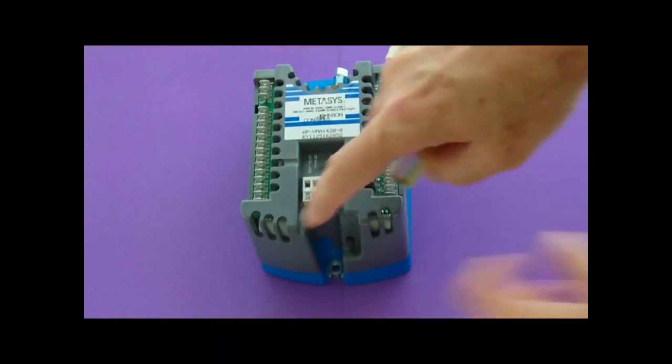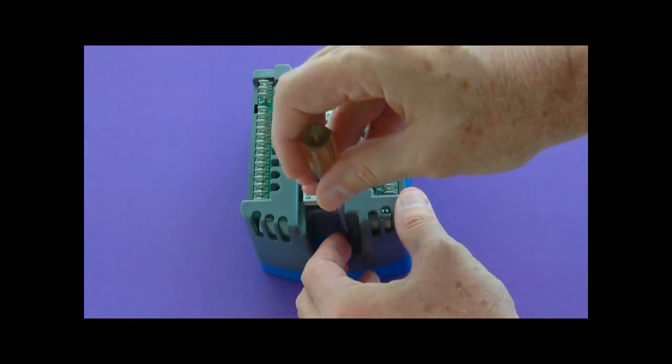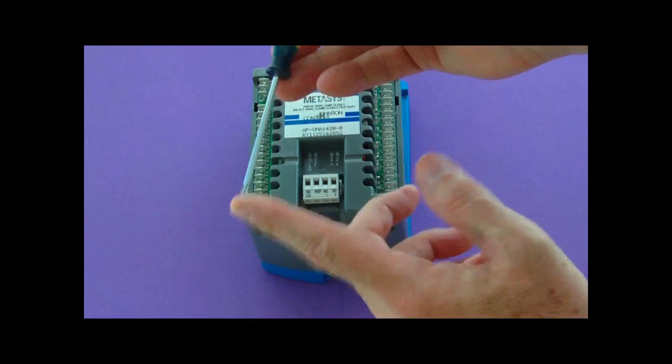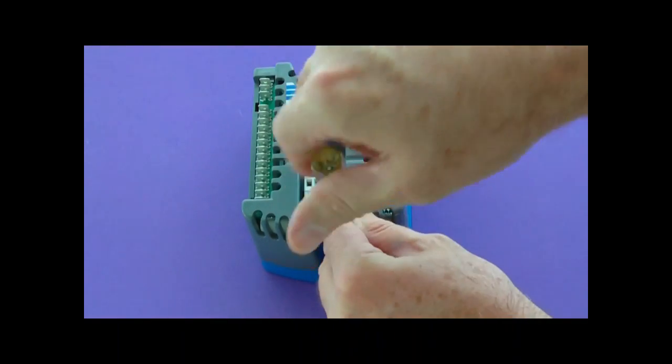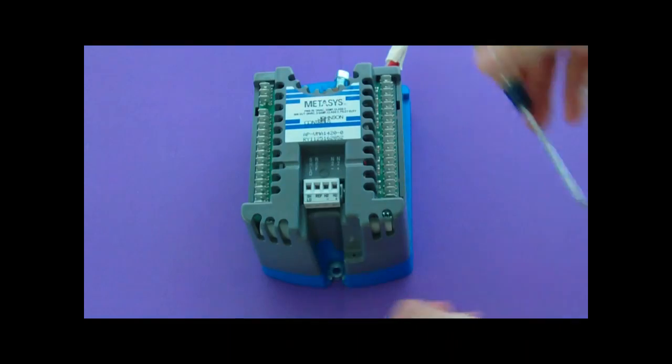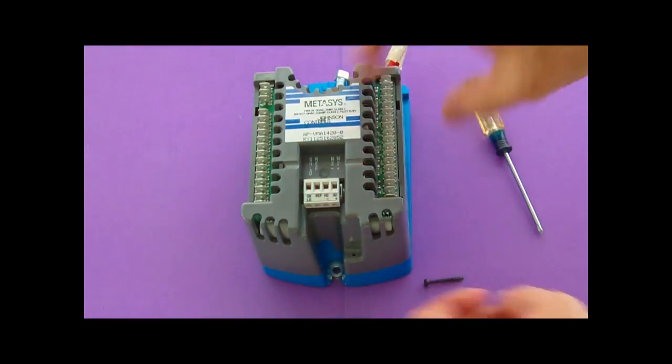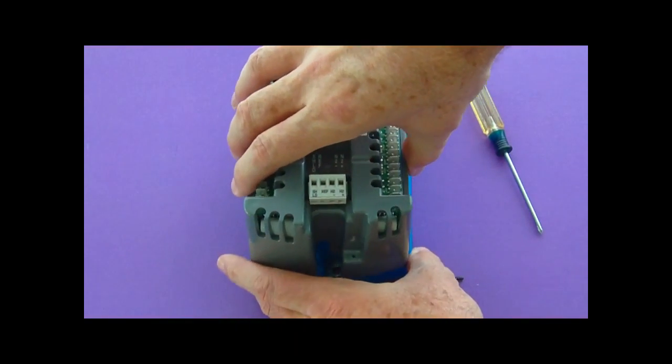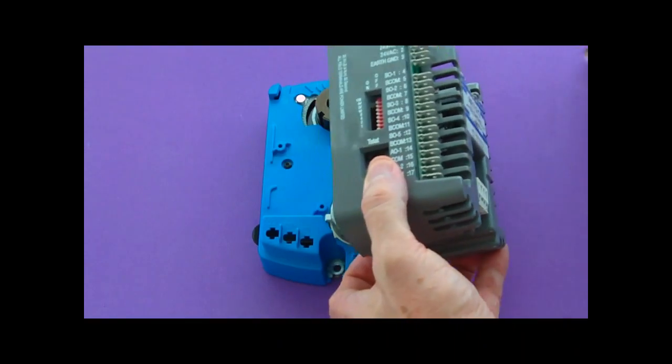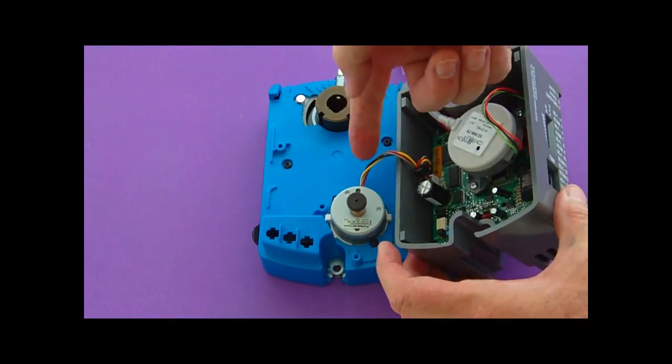In this video, the first thing is this one screw, it's a Phillips screw. Remove the screw, we already have it partially out to help speed up this video. Very gently take the top half off, lay it off to the side.